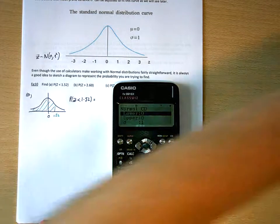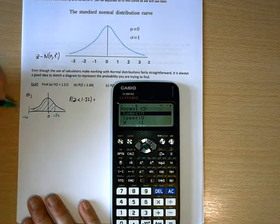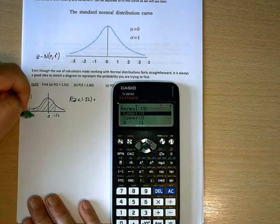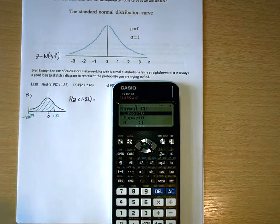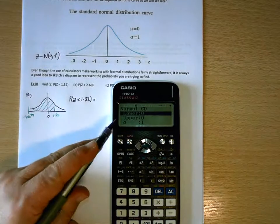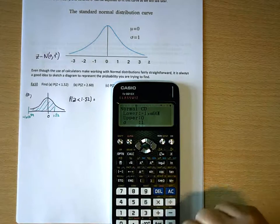So what I have to put in there is, at my lower boundary, a very small number, a small negative number. And the easiest one to use is negative 1 times 10 to the 99. So my lower boundary is going to be minus 1 times 10 to the 99.